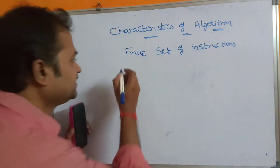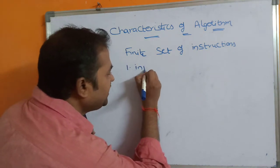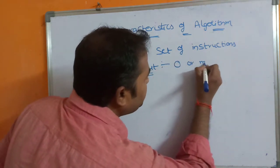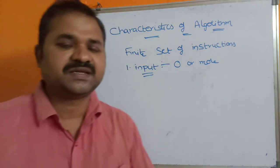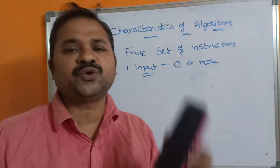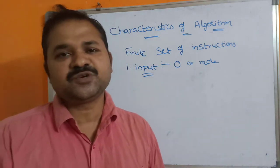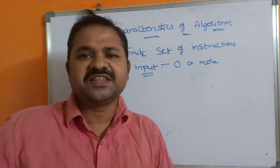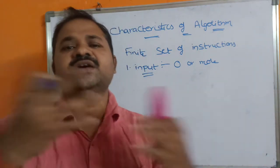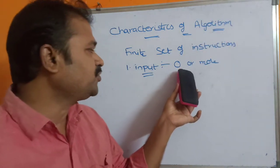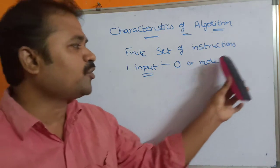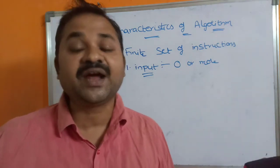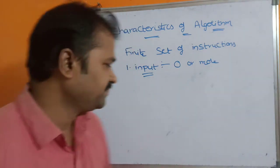The first characteristic of an algorithm is input. An algorithm must accept either zero or more number of inputs. That means without having input also we can write an algorithm. For example, if we want to display a 'Welcome to C Programming' message on the monitor, there is no input — our target is only to display the output. If you want to add two numbers then two inputs are needed; if ten numbers, then ten inputs.